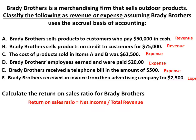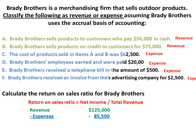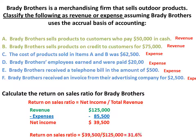Let's calculate the return on sales ratio. Return on sales is net income divided by total revenue. Net income is revenue less expenses. Our revenue from items A and B: $50,000 plus $75,000 gives us $125,000 in revenue. We subtract our expenses: $62,500 plus $20,500 plus $2,500 to get $85,500. Our revenue less expenses gives us a net income of $39,500. Our return on sales ratio is $39,500 divided by $125,000, which gives us 31.6%.